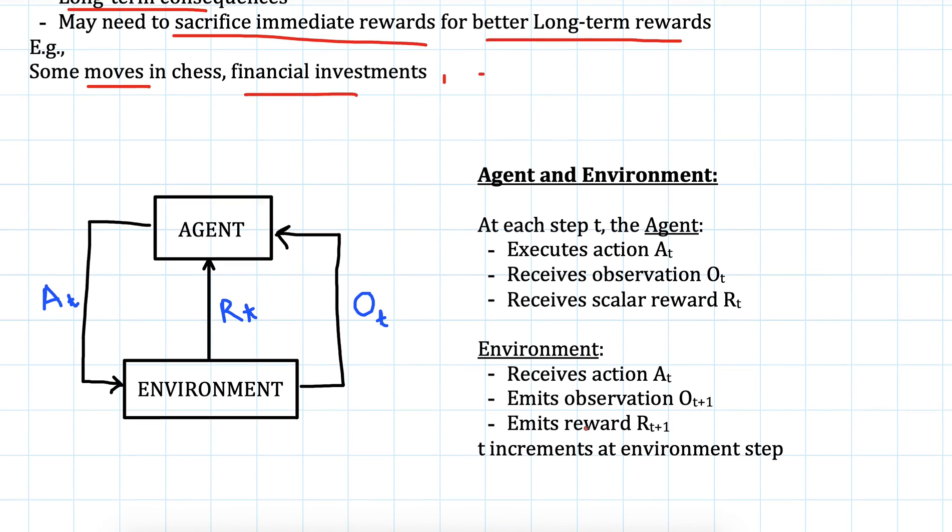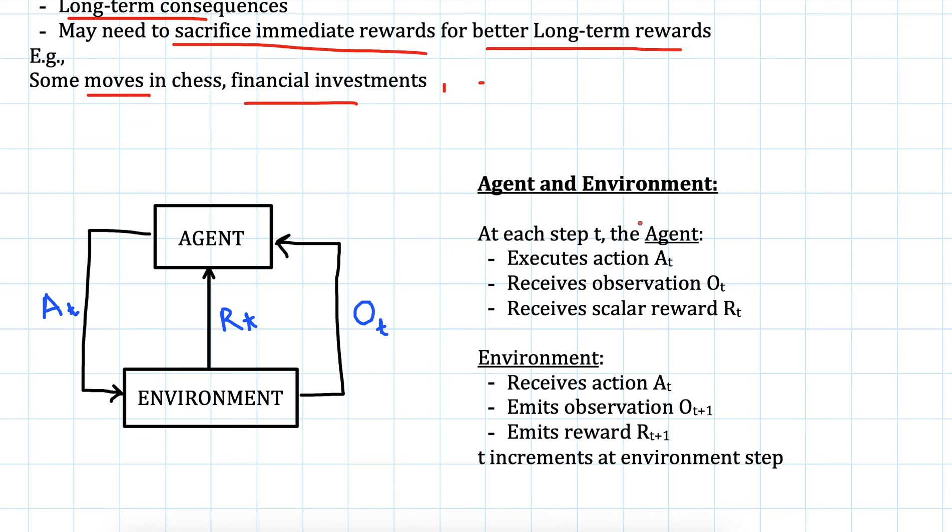Now let's understand this interaction between agent and environment. At time step t, agent executes an action based on its policy and it receives observation from environment and also a scalar reward. Environment receives actions and emits observation ot plus one. In one time step environment receives the action and based on that action in the next time step it will emit an observation and reward. Agent takes some action at time t and in the next time step environment will emit reward and observations.